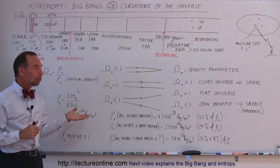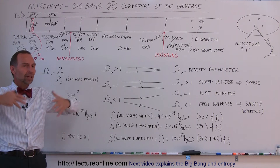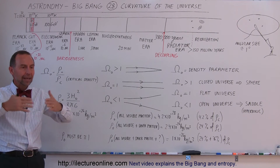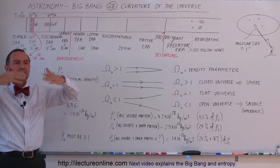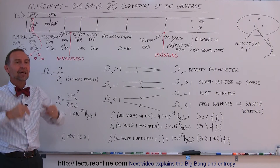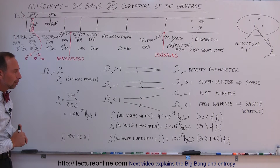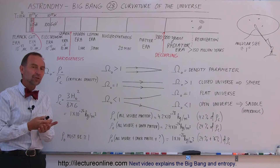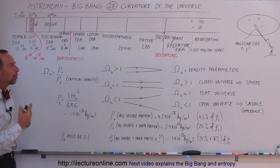In an open universe, the expansion would just continue to accelerate — there's not enough matter for the expansion to slow down, and the universe would just be on a fast-forward track, expanding and never stopping, always going out further and further. So the question is: what is the density of the universe and how does that compare to the density parameter?